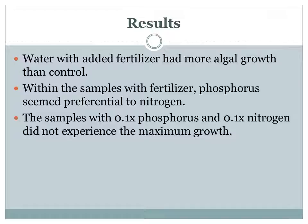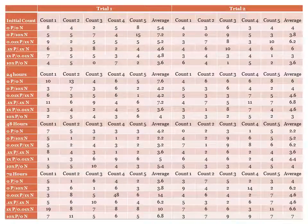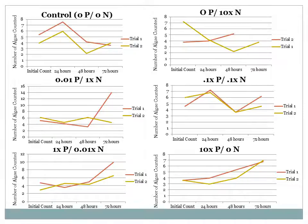Contrary to my hypothesis, the samples with a tenth of the median amount of phosphorus and a tenth of the median amount of nitrogen did not experience the maximum growth — in fact, they had some of the least growth of all samples with added fertilizer. This is a table that shows the results of all 240 algae counts I took with a hemocytometer. Looking at the range of values, it's clear why I needed to take multiple counts and average them together. The average range in the five hemocytometer counts for the same petri dish on the same day is about 6.625, which is quite significant.